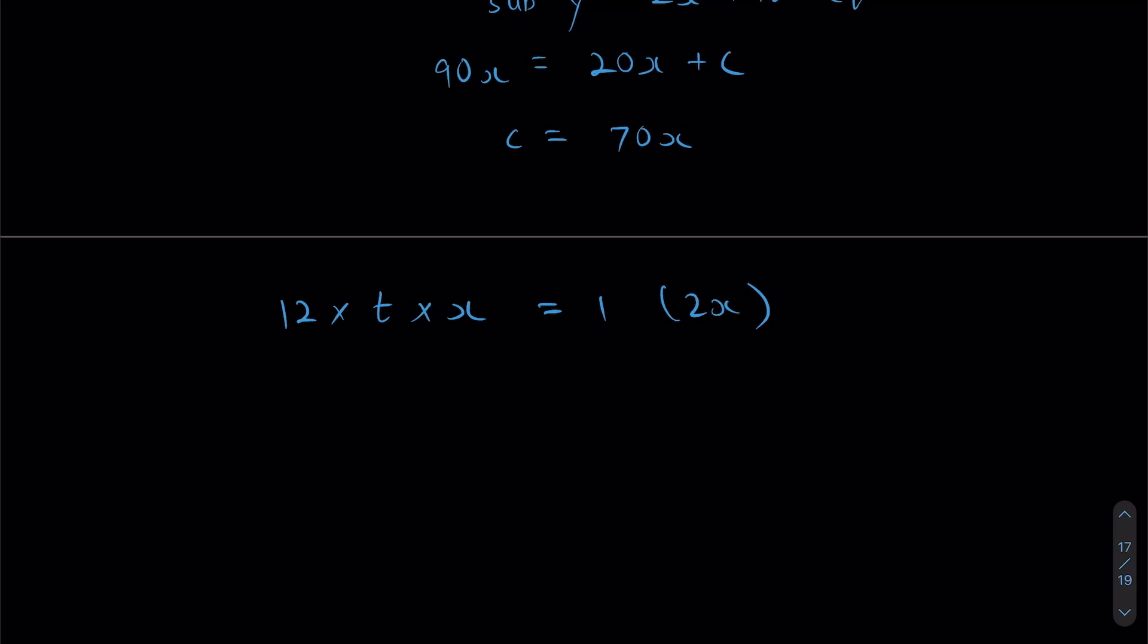Sorry, this wouldn't be 12, this would be T, my bad. Yeah, T times 2X plus C, that's what we normally do. However, we have now expressed C in terms of X, so I'm going to write 70X instead.